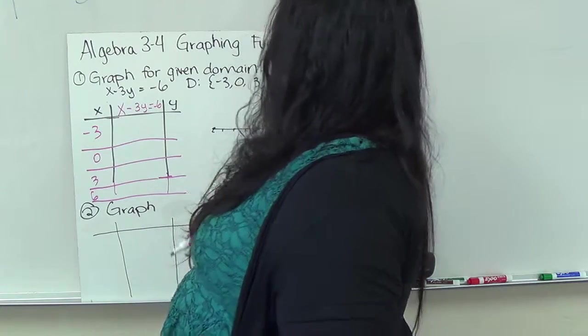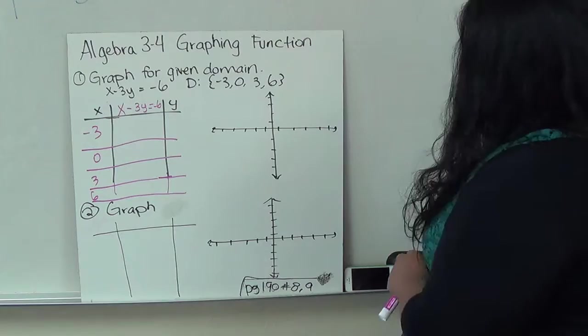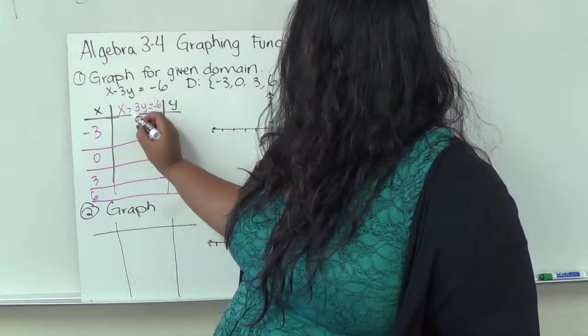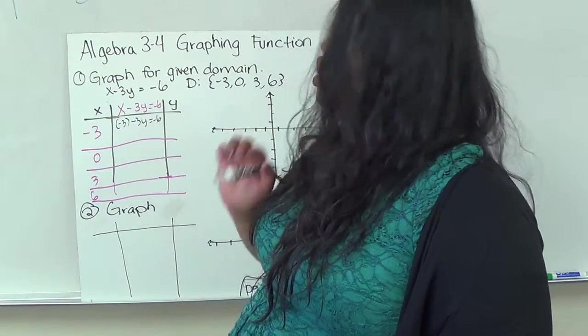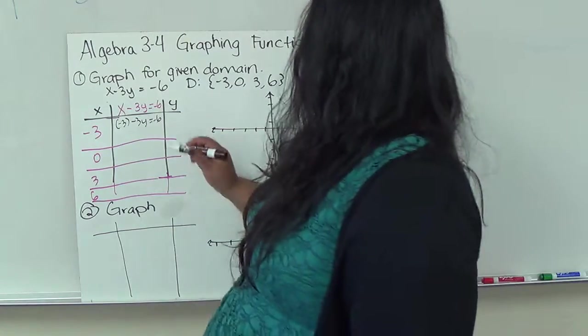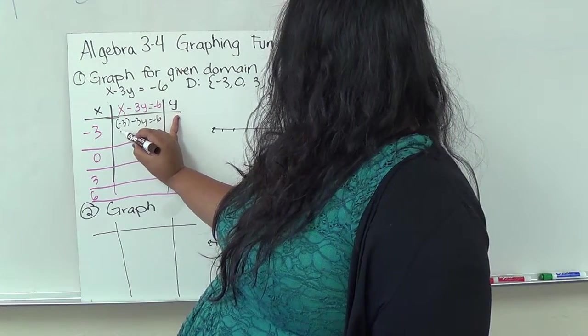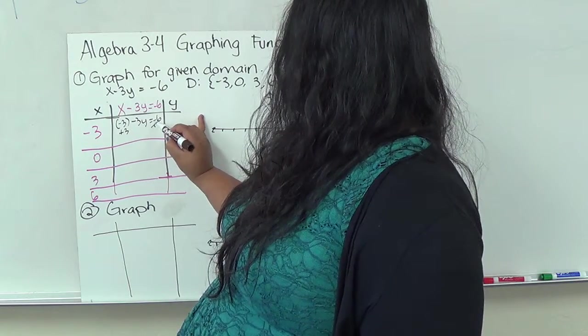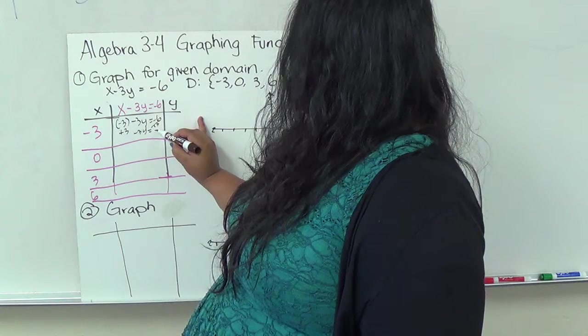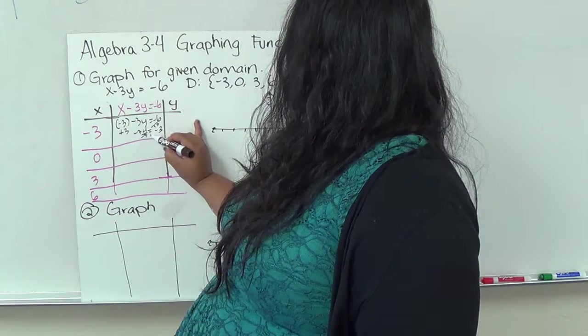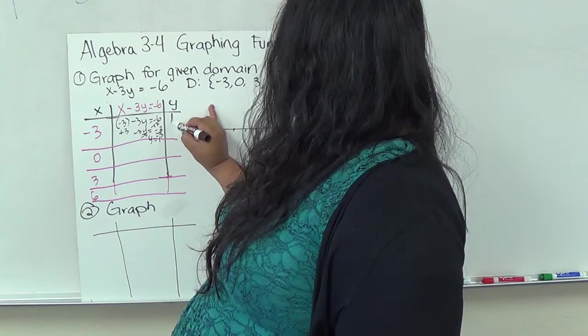Okay, I'm doing this so I have space to work. So my first one is I'm going to take this x and put it in for x. So negative 3 minus 3y minus negative 6. And I'm going to solve for y. So I'm going to add 3 to both sides. I end up with negative 3y equals negative 6 plus 3 is negative 3. Divide by negative 3. I end up with y equals positive 1. So that's 1.